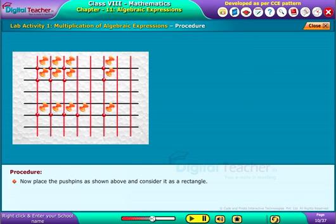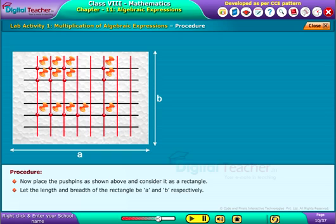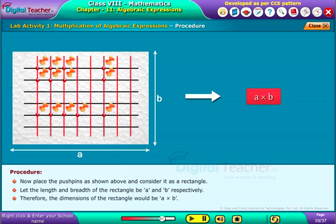Now place the pushpins as shown above and consider it as a rectangle. Let the length and breadth of the rectangle be A and B respectively. Therefore, the dimensions of the rectangle would be A by B.